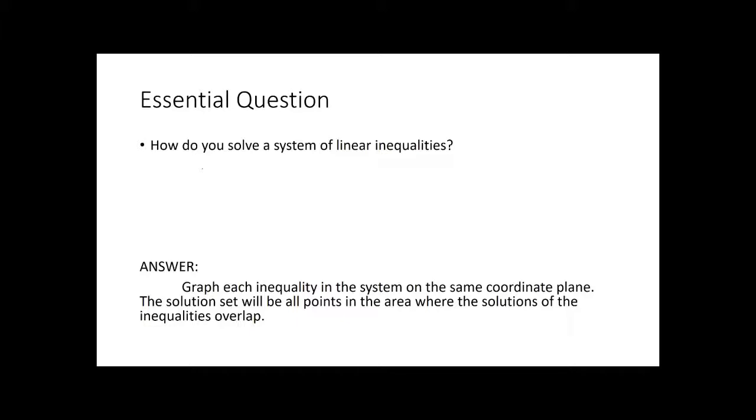So how do we solve a system of linear inequalities? Our shortest answer is basically we graph it. We graph the inequalities, and then once we graph the system on the same coordinate plane, the solution will be all the points in the area. So there's actually an area, not just x marks the spot anymore where the two functions intersect, but now it's an area that's shaded and where the two inequalities overlap.